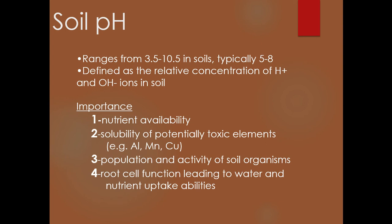Soil pH can range usually from about 3.5 to 10.5 in soils, though we typically see a soil pH of about 5 to 8. It can be defined as the relative concentration of hydrogen ions and hydroxide ions, which are inversely related — as hydrogen ions increase, hydroxide ions decrease. pH is important for nutrient availability, elemental solubility in terms of elements toxic to plant growth, the activity of soil organisms, and root cell function leading to water and nutrient uptake.